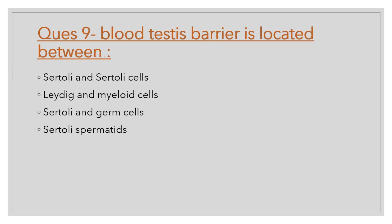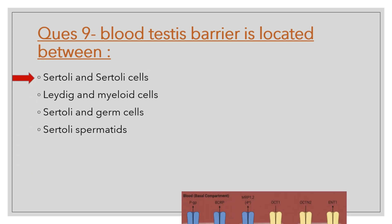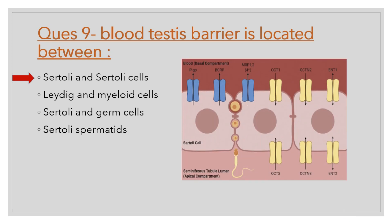Question number 9: The blood-testis barrier is located between which cells — Sertoli to Sertoli cells, Leydig and myeloid cells, Sertoli and germ cells, or Sertoli and spermatid? The correct option is Sertoli and Sertoli cells only, as you can see in the picture.